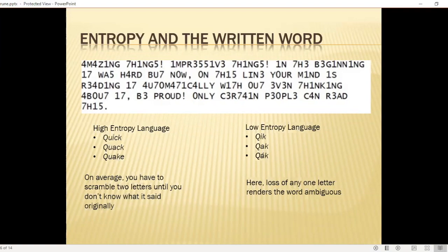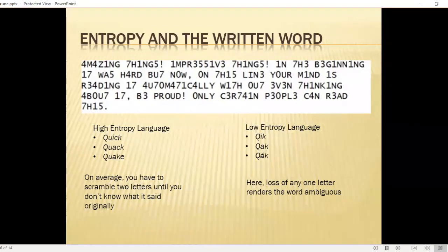Reading runes is unfortunately part of the problem of both transcribing and interpreting. An example of a high-entropy language is English, where we have 'quick,' 'quack,' 'quake.' A low-entropy version would be 'QIC,' 'QAK,' 'Q-long-A-K.' On the high-entropy side I can lose the C's and the U's and still know what the word says. On the low-entropy side, if I lose any letter, I don't know what it says anymore. Since a lot of this was done in stone carving, they wanted to expend as little effort as possible, so they tended to use very low entropy.